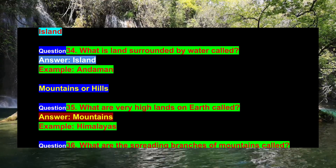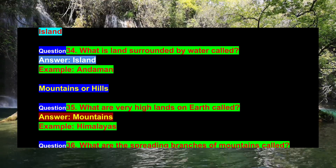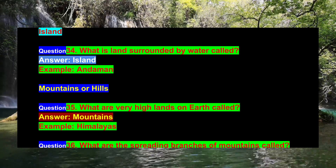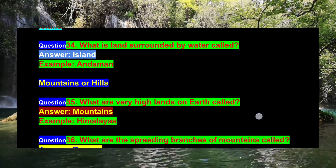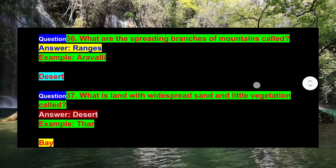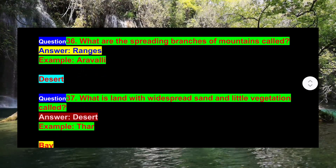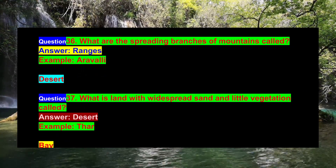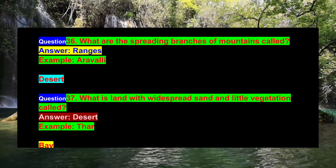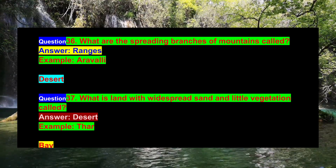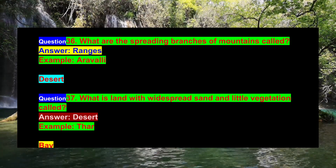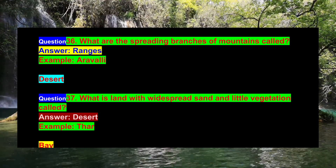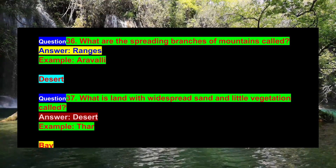Question 34: What are very high lands on earth called? Answer: Mountains. Example: Himalayas. Question 36: What are the spreading branches of mountains called? Answer: Rangers. Example: Aravalli. Question 37: What is land with widespread sand and little vegetation called? Answer: Desert. Example: Thar.